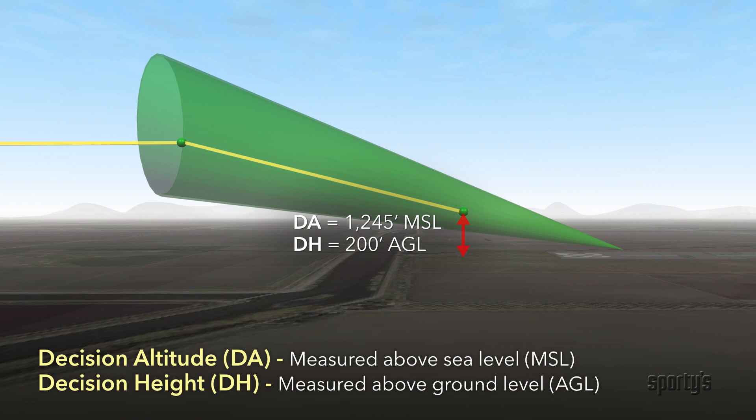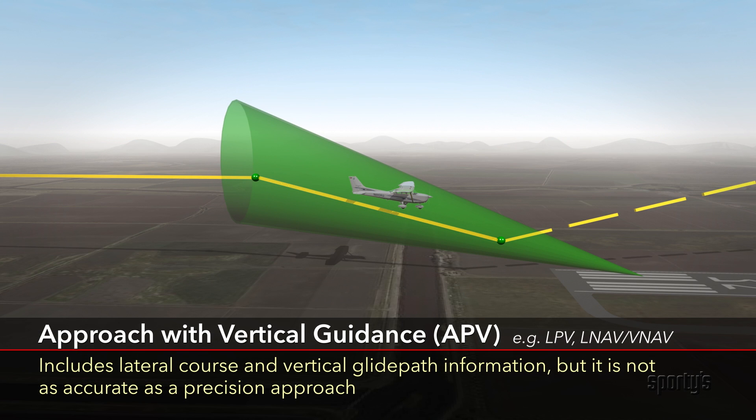Incidentally, some use the term decision height instead of decision altitude. Decision height is really the height above the threshold elevation. Like a precision approach, an approach with vertical guidance has both course and glide path information, but it is not as accurate as a precision approach.